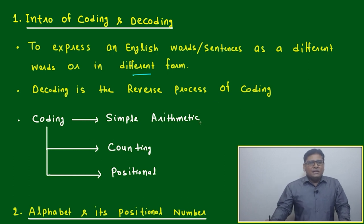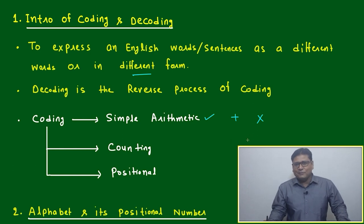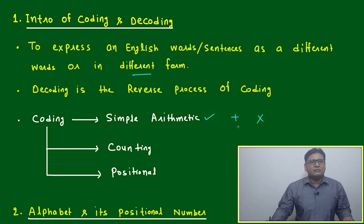Coding will follow many times simple arithmetic operations - addition and multiplication. Many times you will find coding will be based on addition, like the position of one alphabet will be related to code by certain additional properties or certain mathematical reasoning or arithmetic property.